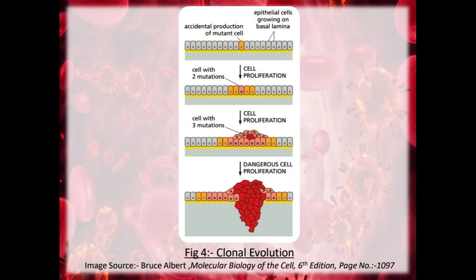The next diagram talks about clonal evolution. As mentioned, in a cell there have to be multiple mutations for cancer to start. This image shows how accidentally in the first step a cell is mutated, then again due to some reason it gets mutated again and again. In the end we get a very dangerous cell proliferation or tumour formation.